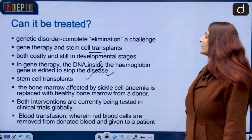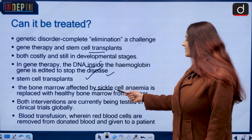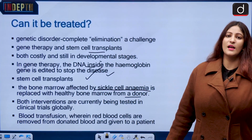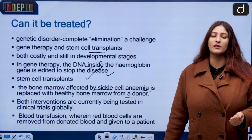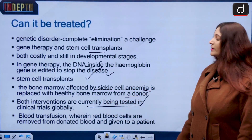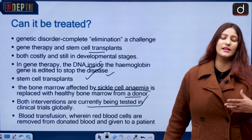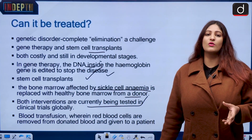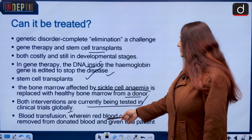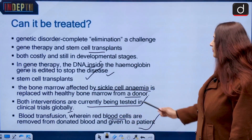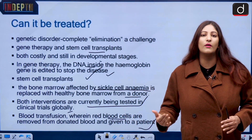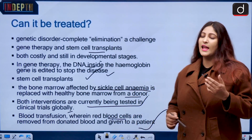In stem cell transplants, the bone marrow affected by sickle cell anemia is replaced with healthy bone marrow from a donor, but finding such donors is difficult. These interventions are currently being tested in clinical trial stage only, so they are not a certain solution. Blood transfusion is another therapy wherein red blood cells from donated blood are given to a patient, but that carries its own risks of infection and other concerns.